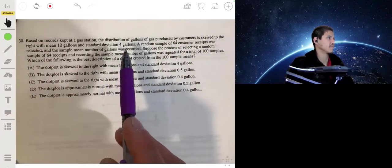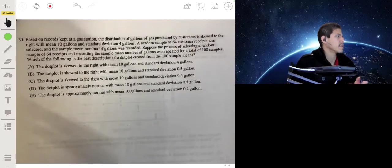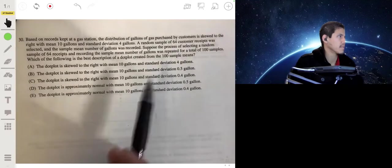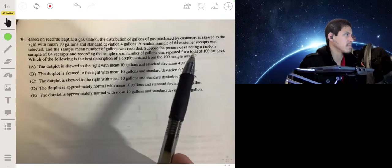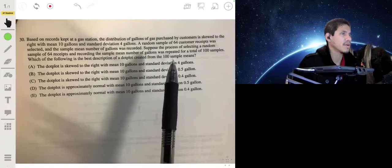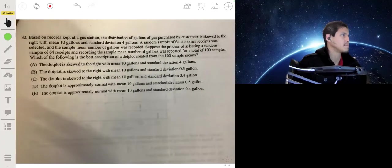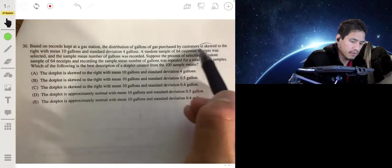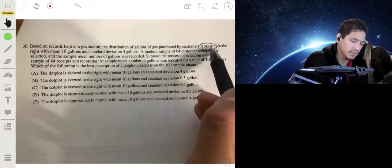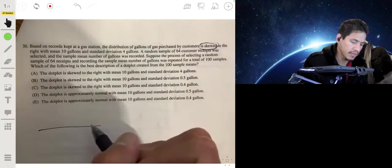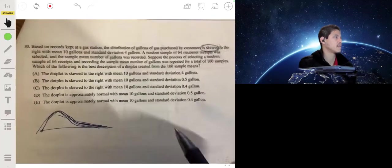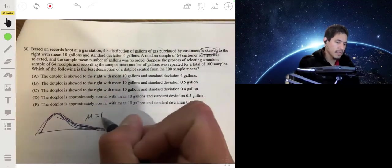Based on records kept at a gas station, the distribution of gallons of gas purchased by customers is skewed to the right with mean 10 gallons, standard deviation 4 gallons. A random sample of 64 customer receipts was selected and the sample mean number of gallons was recorded. Suppose the process of selecting a random sample of 64 receipts and recording the sample mean number of gallons is repeated for a total of 100 samples. Which is the best description of a dot plot created from 100 sample means? They're trying to throw you off because they're saying the distribution of gallons of gas is skewed to the right. So they're saying it's something like this, maybe there's a tail that's going off, veering off to the right of the mean of 10 standard deviation of 4.